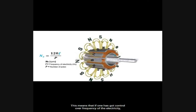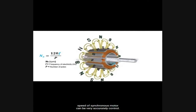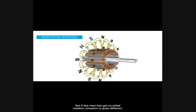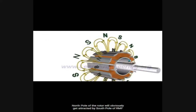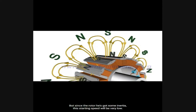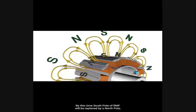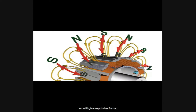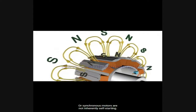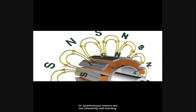If one has control over the frequency of the electricity supply, the speed of a synchronous motor can be very accurately controlled. However, if the rotor has no initial rotation, the north pole of the rotor gets attracted by the south pole of the RMF and starts to move, but due to rotor inertia the starting speed is very low — by which time the south pole of RMF is replaced by a north pole, giving a repulsive force. As a net effect, the rotor won't be able to start.